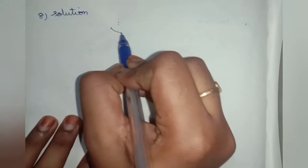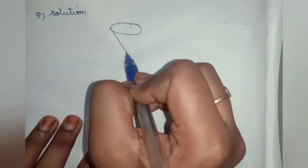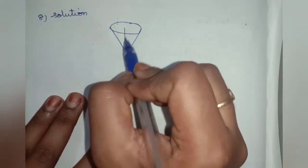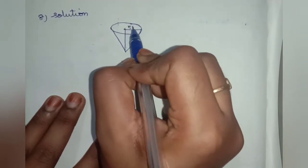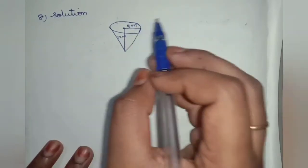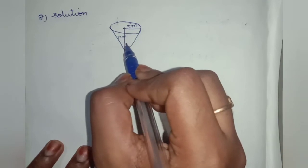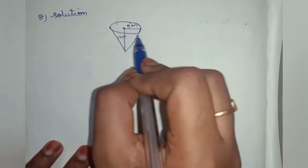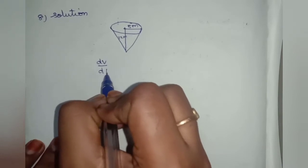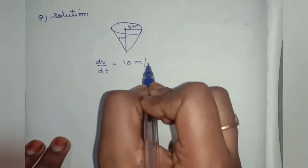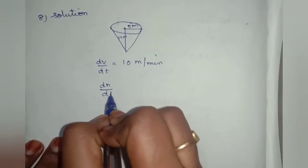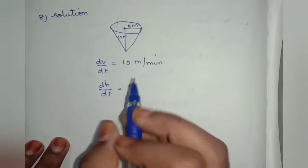There is a conical water tank with a radius of 5 meters at the top, and the vertex down is 12 meters.